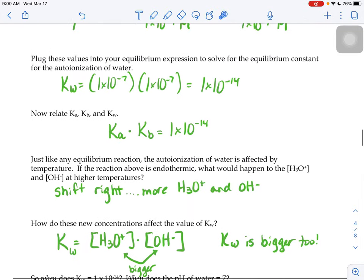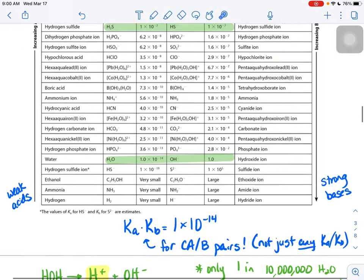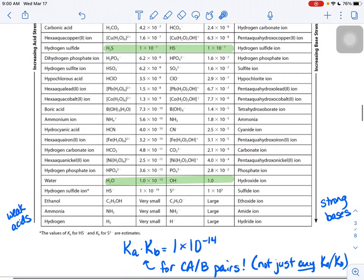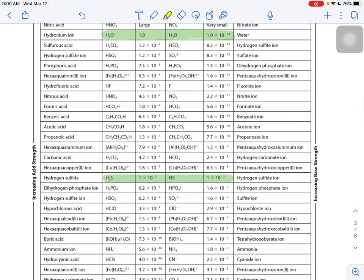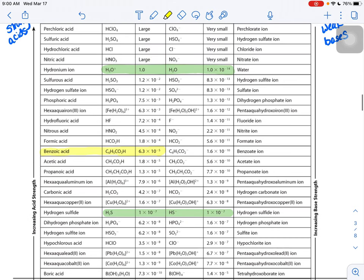So let's go back to our chart and we are going to find benzoic acid, which is right here. Benzoic acid has a Ka value of 6.3 times 10 to the negative fifth.